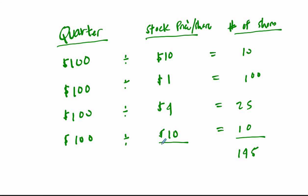And if we look at the total that you spent per share, it would be $10, $1, $4, $10. So we got 145 shares. Add up all the prices, and you paid $25, and you spent a total of $400.